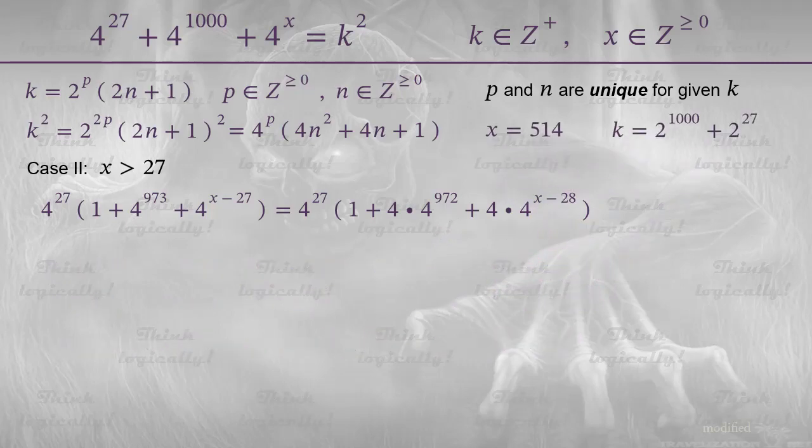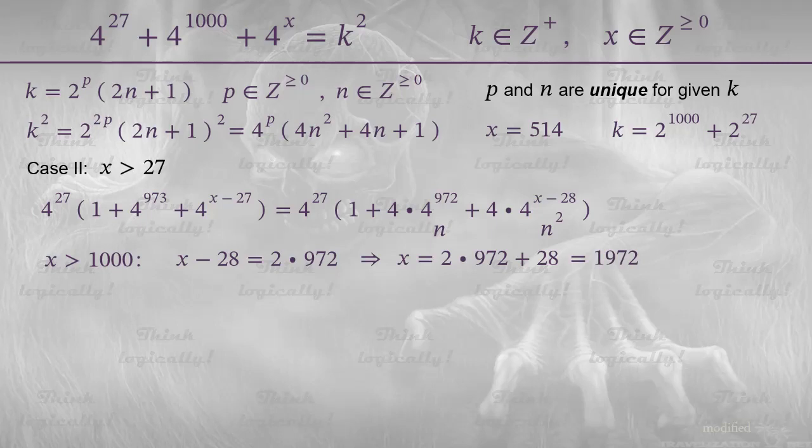And we have another subcase to consider. When x is greater than 1000. Now, the assignments of n squared and n go in the opposite way. This gives a definite equation for x. x minus 28 equals 2 times 972. Such an equation can be solved even by a primary school student. The result is 1972. I guess 1972 was the year where the problem appeared. This value of x is really greater than 1000. And the only thing remained is finding the value of k.